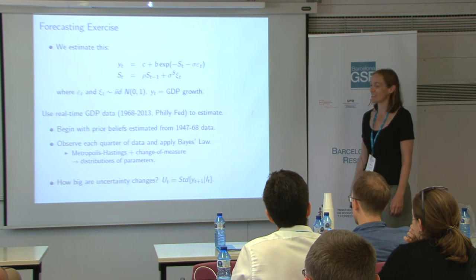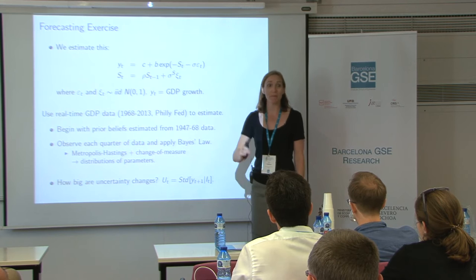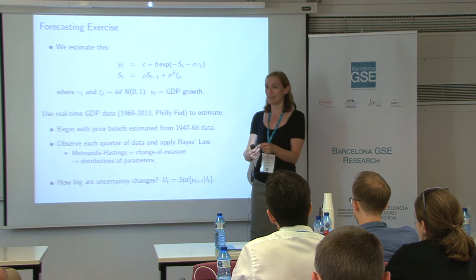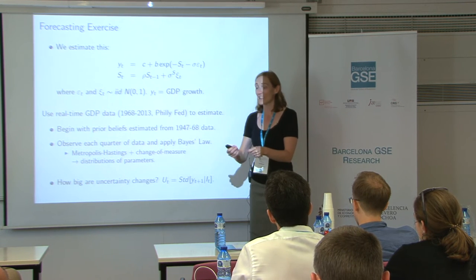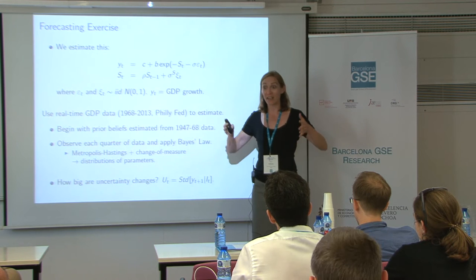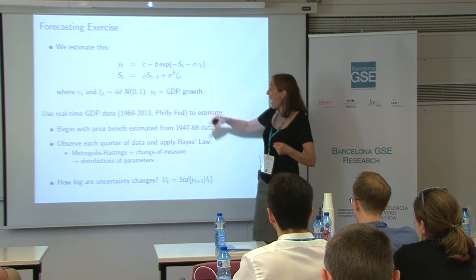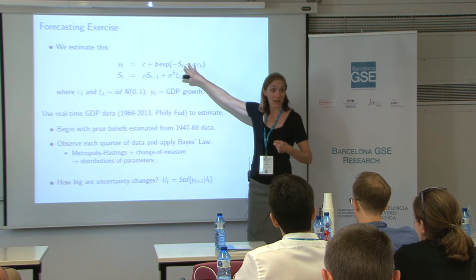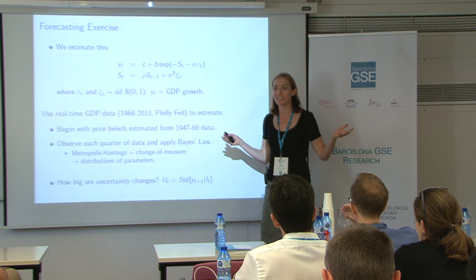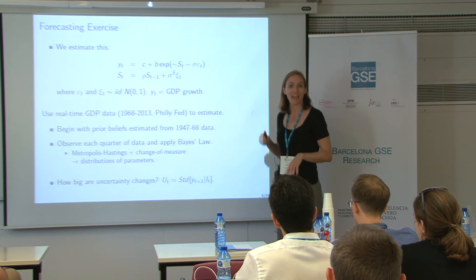There are two new parameters G and H that govern skewness and kurtosis. We're shutting off the kurtosis parameter and using just G for skewness. Here's the forecasting exercise: we take this two-equation system, feed in U.S. GDP data, and estimate it. Each period we feed in the next quarter of GDP data and re-estimate it, and every time we re-estimate it we ask: how uncertain are people? How far do they believe their forecast will be from the truth? We compute distributions of parameters conditional on all the data seen, using Bayes' law.